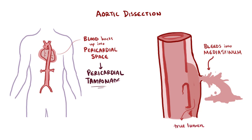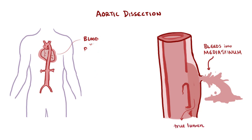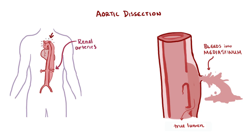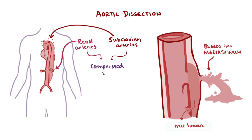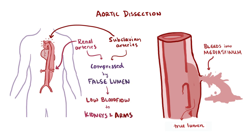Yet another possibility is that the blood could continue to tunnel between the tunica intima and tunica media until it reaches another artery that branches off the aorta, like the renal arteries or the subclavian arteries. The blood in the false lumen can put pressure on these branching arteries, decreasing blood flow to the kidneys and arms, causing a whole new set of complications.